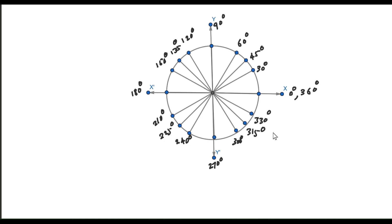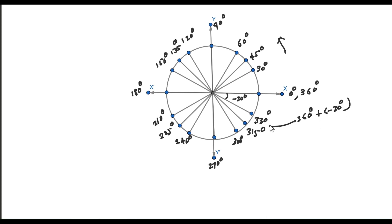These are the angles when measured in the anti-clockwise direction — they are positive. Now if we measure in the clockwise direction, the angles become negative. For example, measuring in the clockwise direction gives minus 30 degrees. You can verify: 360 degrees plus (minus 30 degrees) equals 330 degrees, which matches our earlier result.